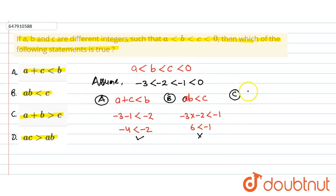Let's check option C. C says A plus B greater than C. A ki value kitni hai? Minus 3. B ki value minus 2 greater than minus 1. So minus 5 greater than minus 1 is not possible. Option C is wrong.